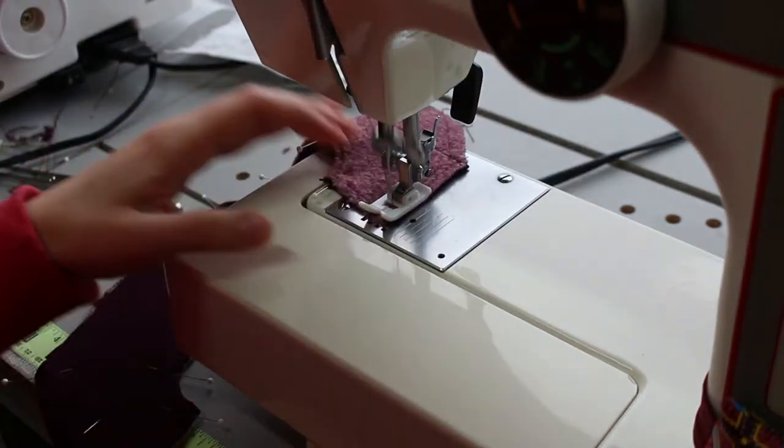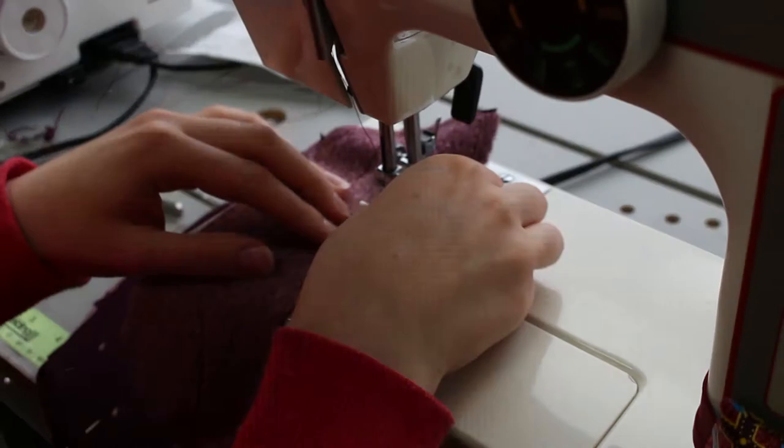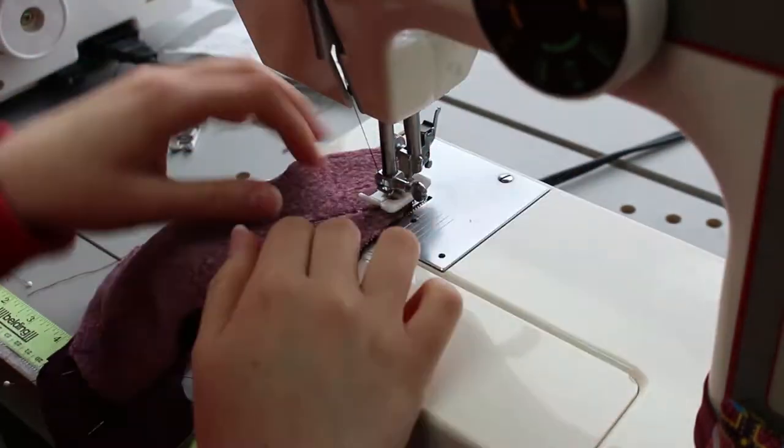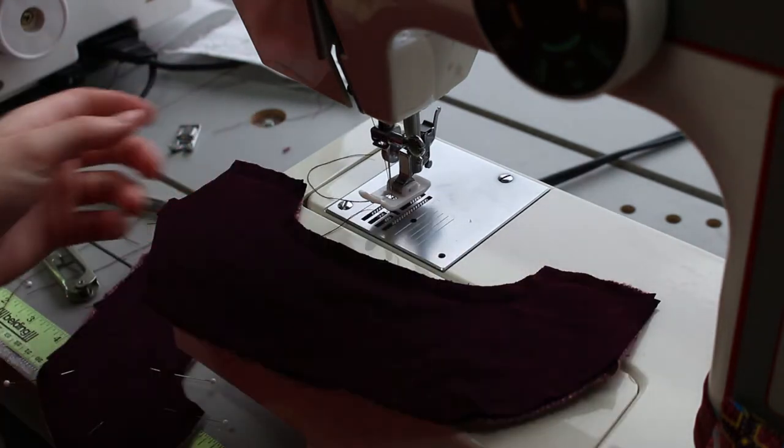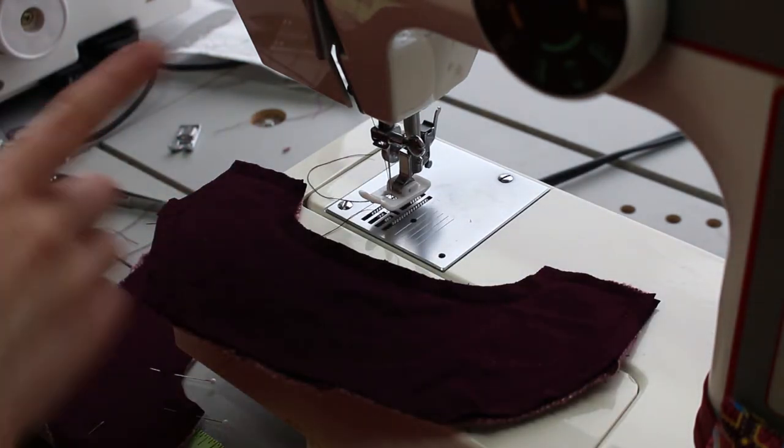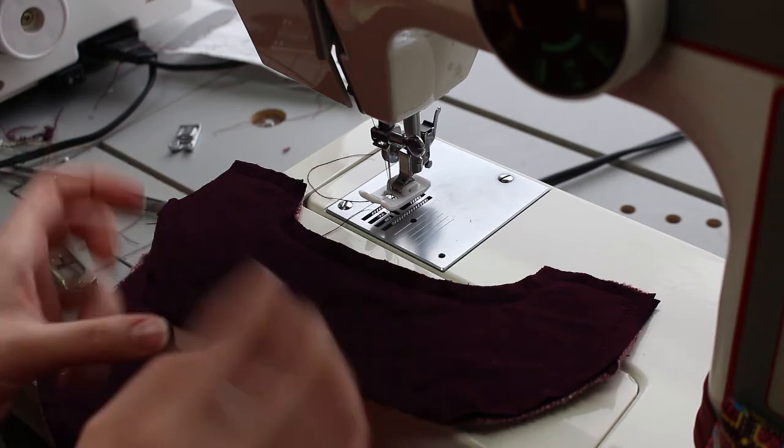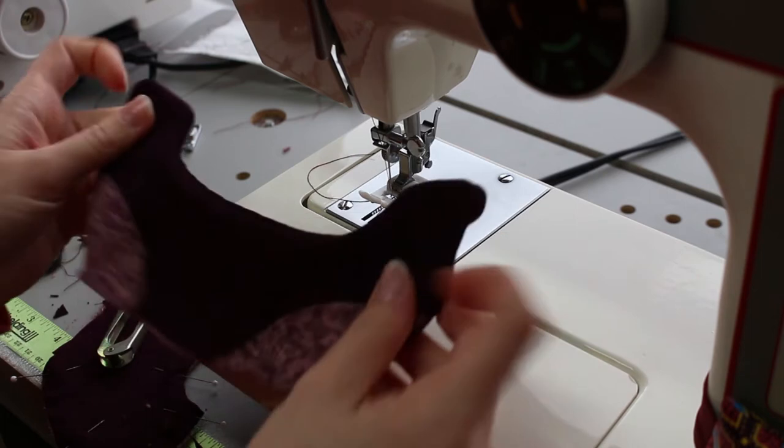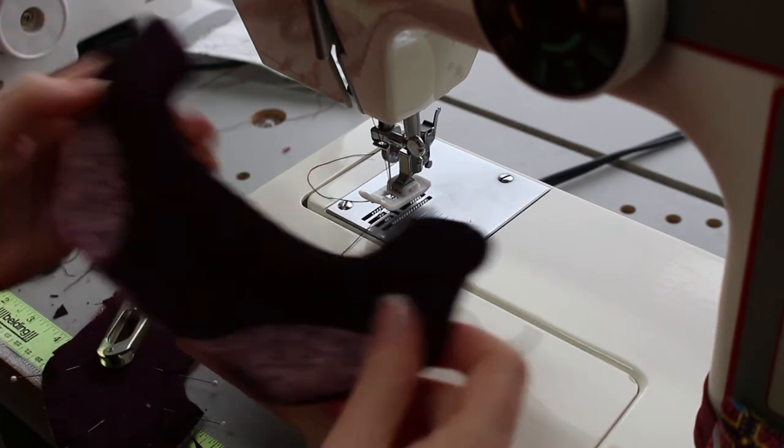And see if it'll help the knit go through smoother. And the pattern calls for a quarter inch seam allowance for this part. This sewed really well with the jersey on the bottom and the Teflon foot on the top. So it says to clip your corners and turn it right side out. I'm going to have to get my gauge in here and push out the corners a bit better.